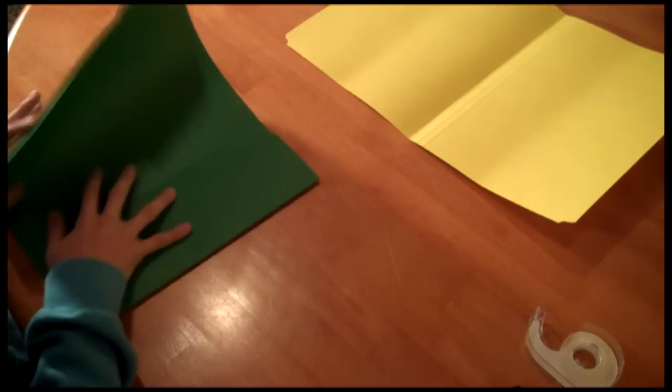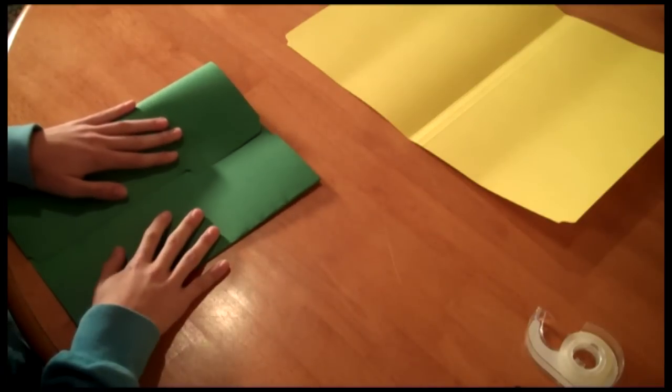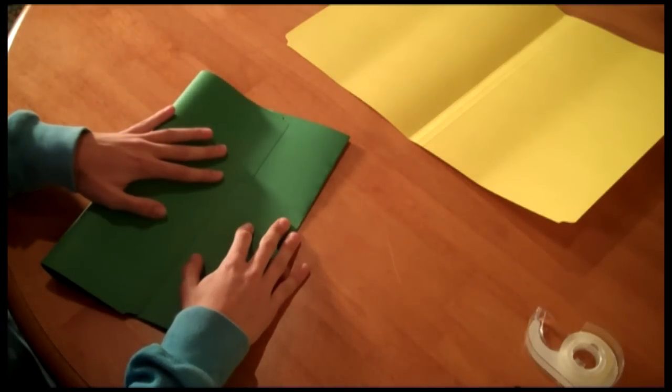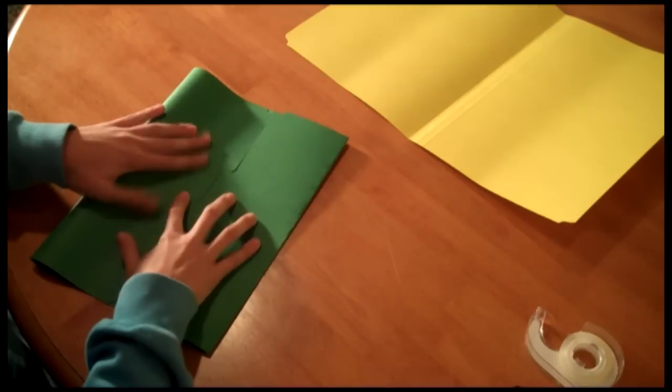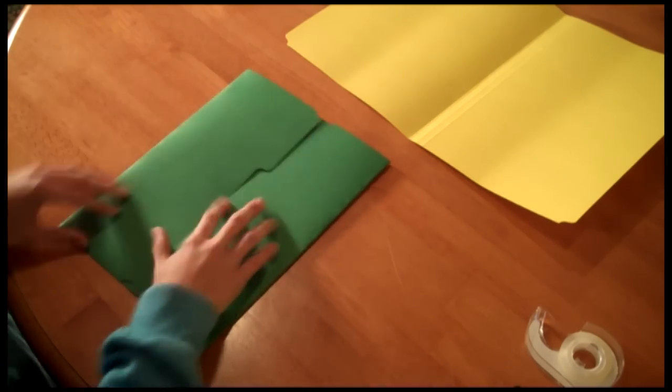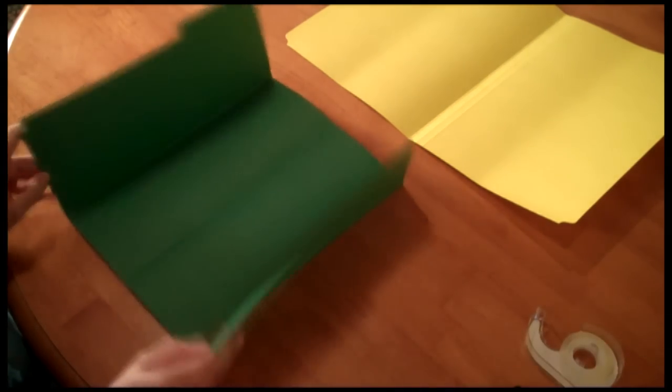If you repeat that step with the left side, make sure that you don't overlap the tabs, but rather have them fit together to ensure an easy opening for your folder book. When finished, your folder book will look like this.